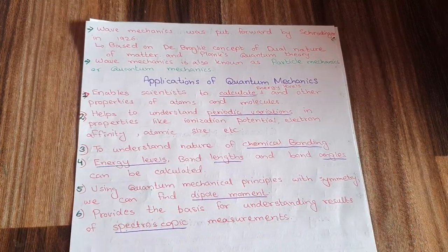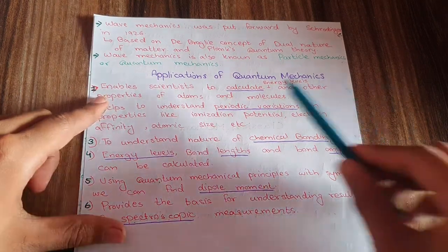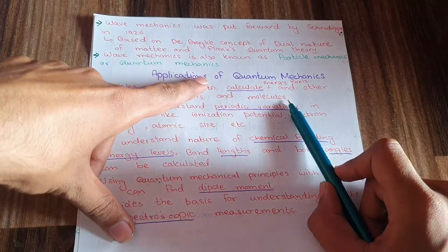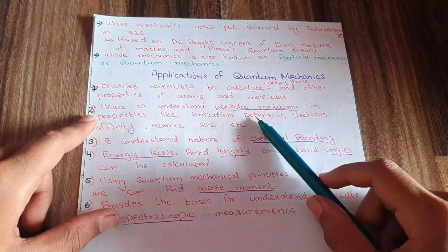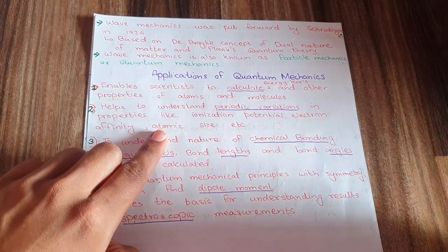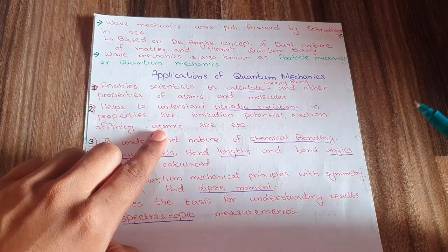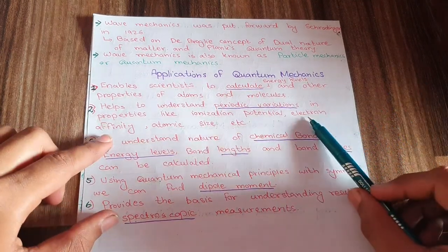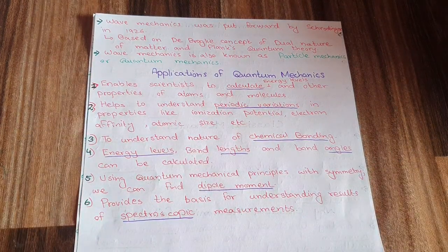Applications of quantum mechanics: first, it enables scientists to calculate energy levels. Second, it helps understand periodic variations in ionization potential, electron affinity, and atomic size — such as why atomic size decreases from left to right in a period and increases from top to bottom in a group.